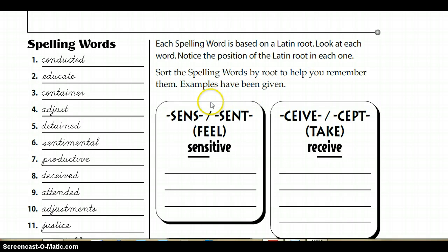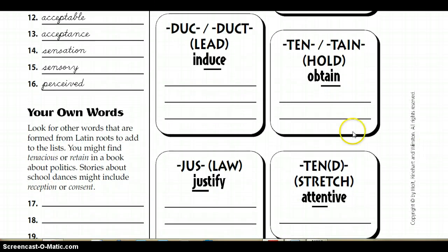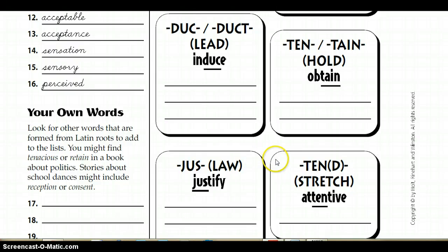Sense and sent means 'feel,' and the example they give is 'sensitive.' Sieve and sept mean 'take,' and the example they give is 'receive.' Duct means 'lead,' and the example they have is 'induce.' Ten and tain mean 'hold,' and the example they give is 'obtain.' Just means 'law,' and the example they give is 'justify.' And ten or tend means 'stretch,' as in 'attentive.'